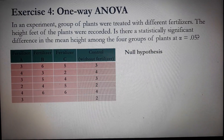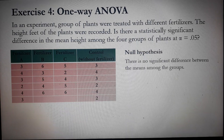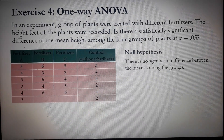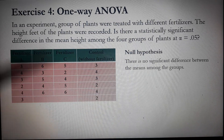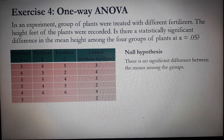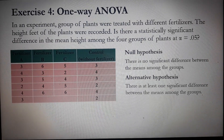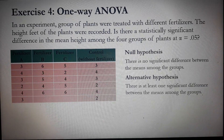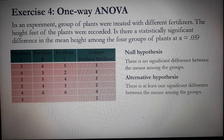Let's state the null hypothesis: there is no significant difference between the means among the groups. In other words, the mean height of the plants for the four groups are just equal. For the alternative hypothesis: there is at least one significant difference between the means among the group of plants — in other words, there is at least one pair of means that are not equal.